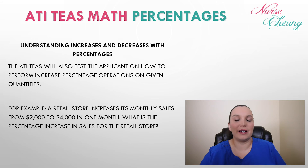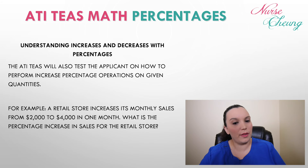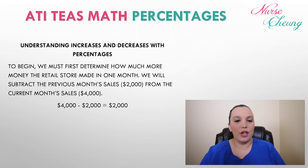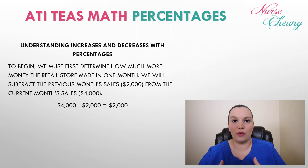Now that we understand decreases with percentages, let's move on to increases. The ATI TEAS will test the applicant on how to perform increased percentage operations on given quantities. For example, a retail store increases its monthly sales from $2,000 to $4,000 in one month. What is the percentage increase in sales? This operation is more complicated because we're not given a percentage — they're asking us to figure out the percentage. First, we subtract the previous month's sales from the current month's: $4,000 minus $2,000 equals $2,000.